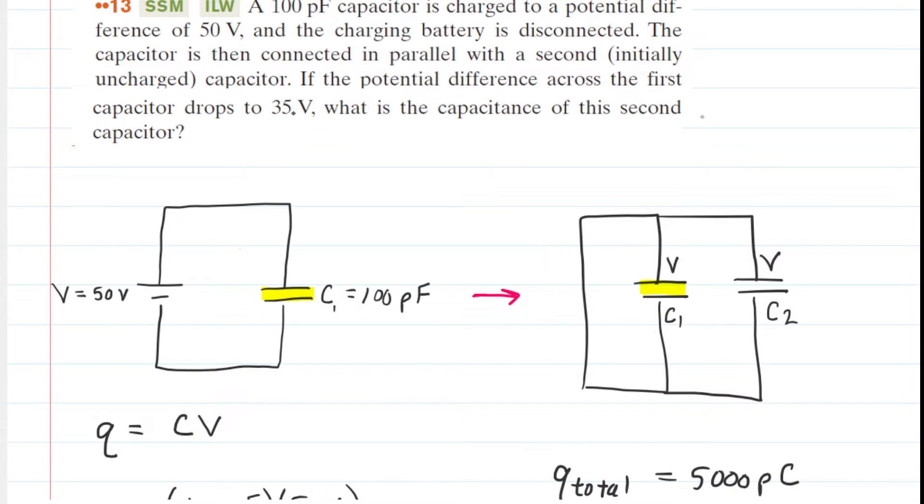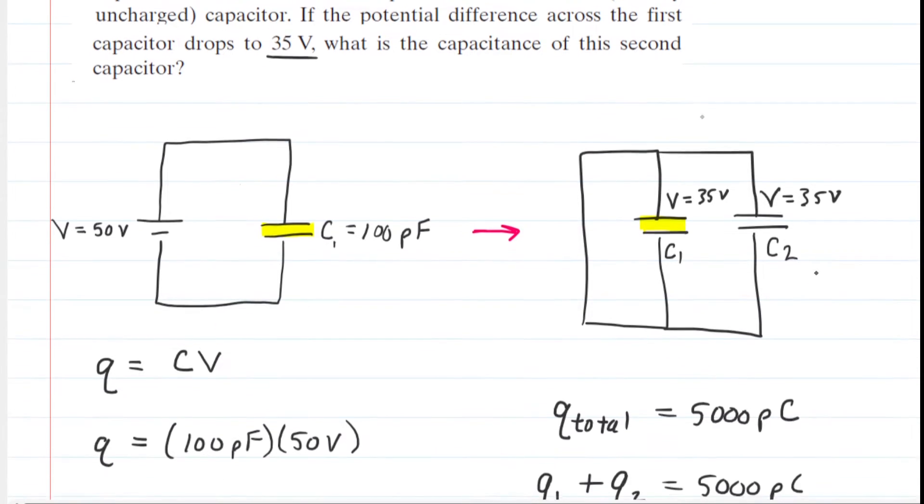They told us in the question that the potential difference across the first capacitor is 35 volts. So the V for the first capacitor is 35 volts. That means the V for the other capacitor is also 35 volts. That is very important for solving this question.